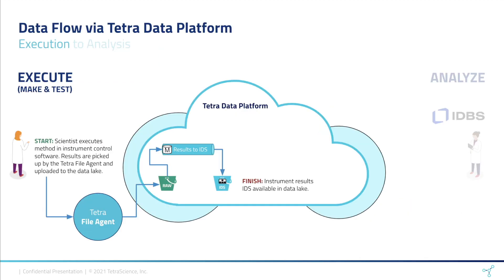We break down the data flow into two phases. First, we look at the flow of the data from the instrument to the Tetra data platform data lake. The scientist executes the method in the instrument control software, and the raw data from the instrument is picked up by a Tetra file agent and uploaded to the data lake. This automatically triggers a data pipeline, which transforms the raw instrument data into our harmonized JSON-based intermediate data schema, or IDS.